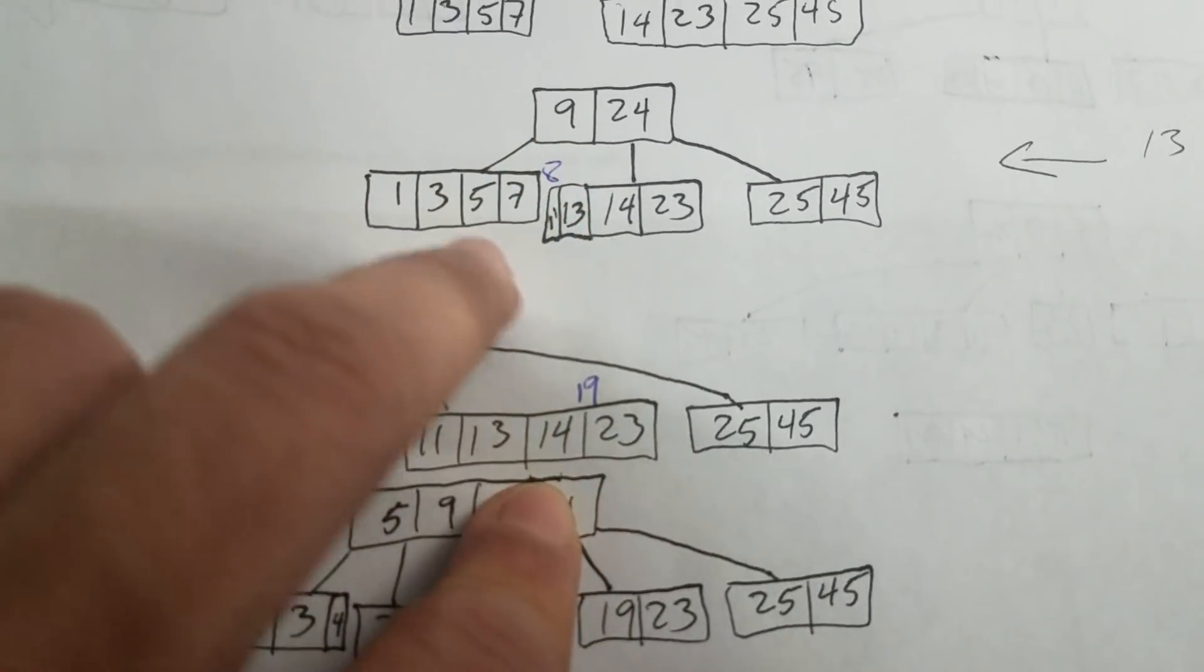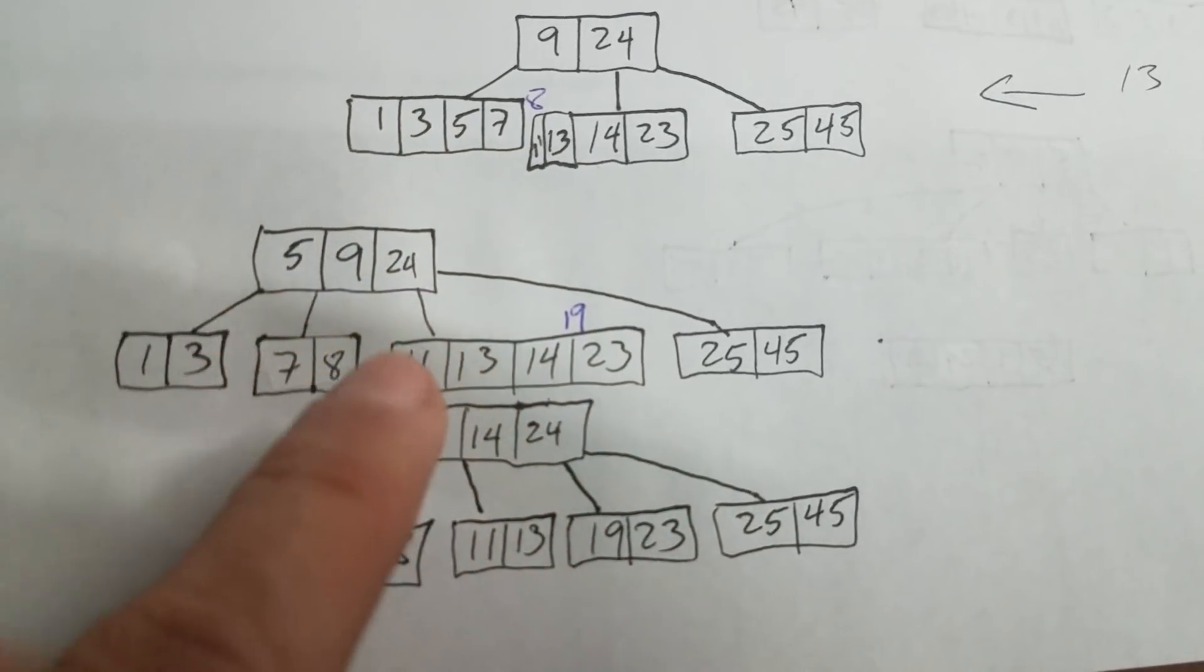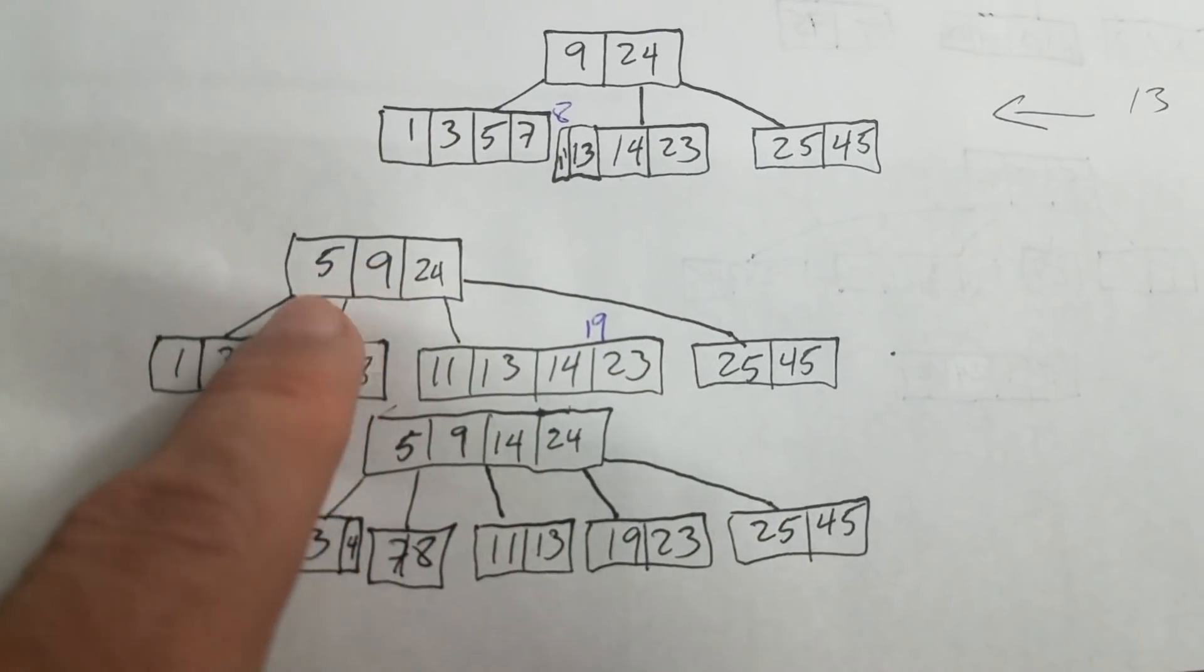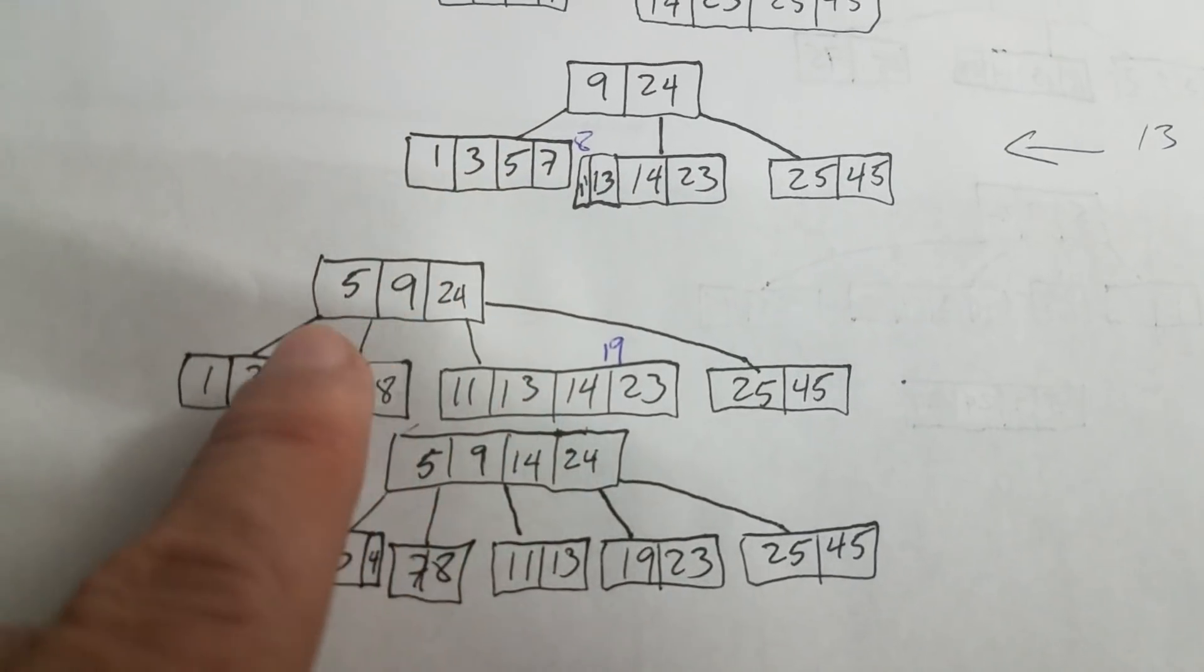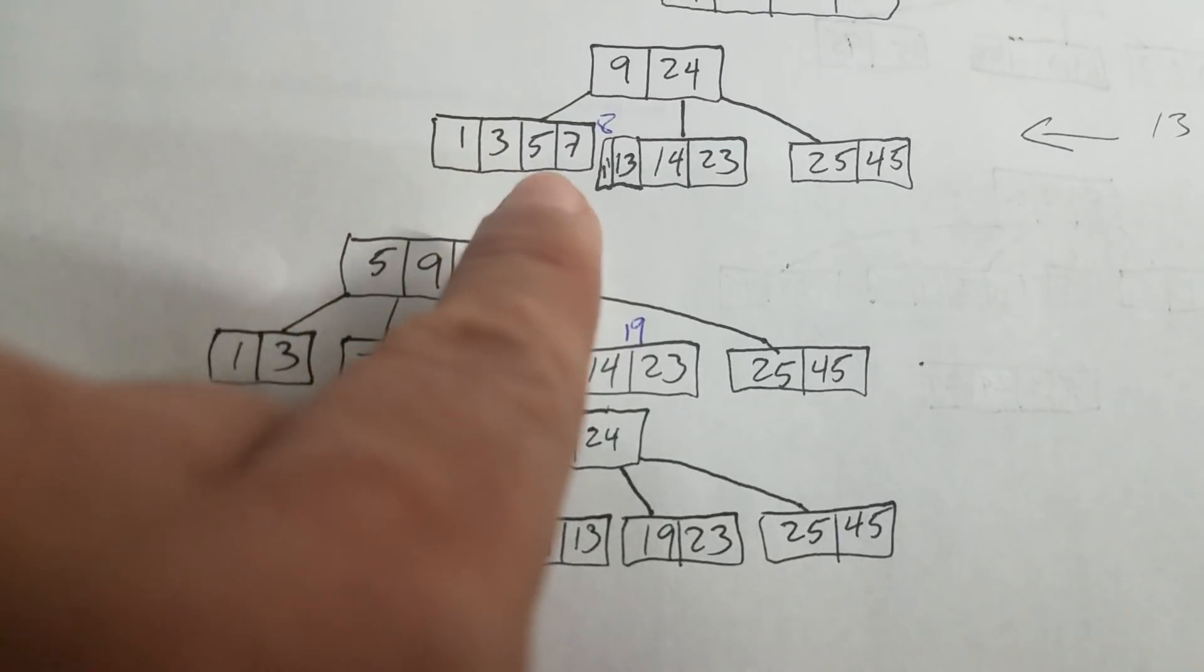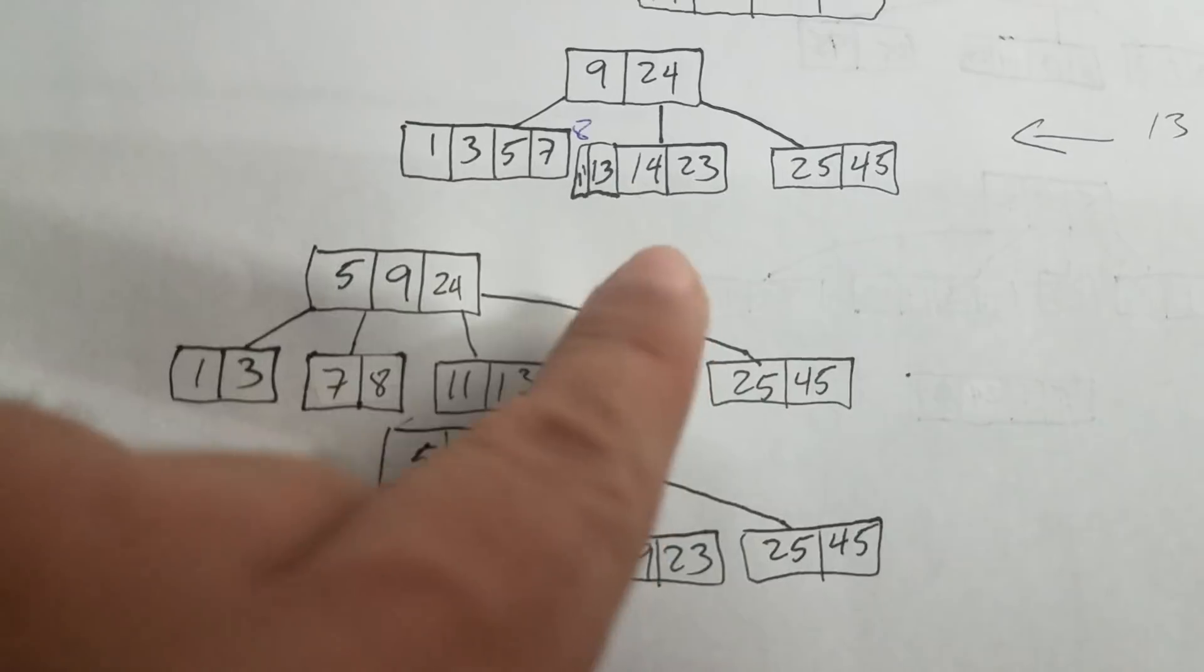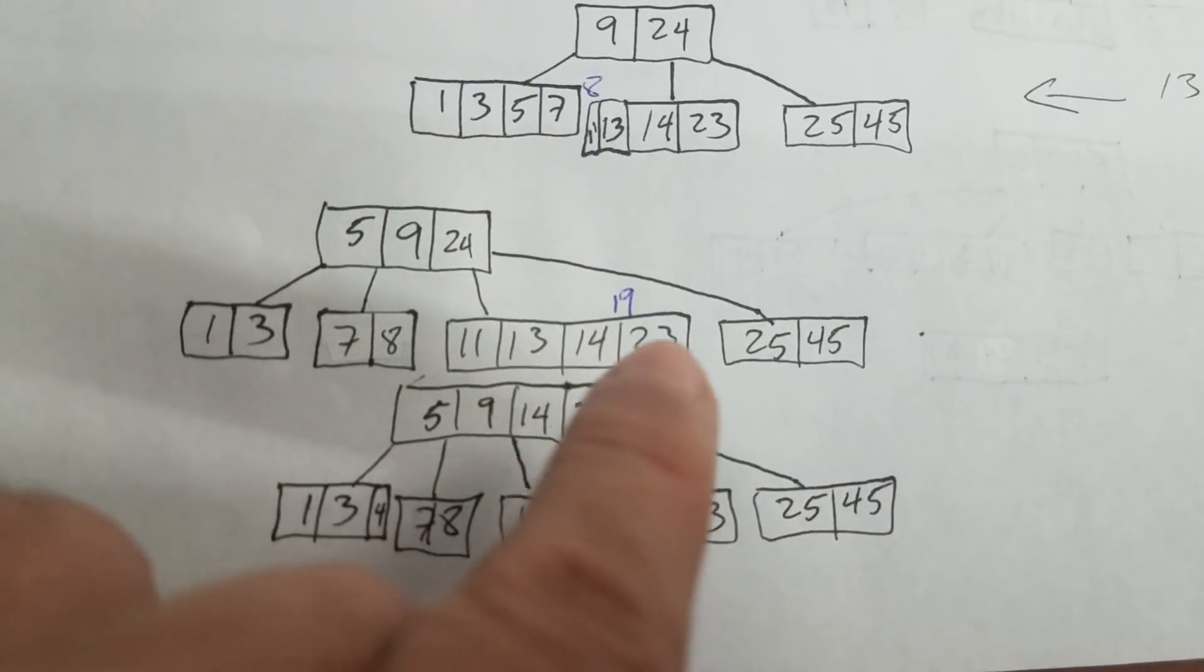We're going to promote it to the top and then we're going to split these two. So you see, 5, this one here, the middle one. We promote it to the top and we split 1, 3 and 7, 8. And then this one here, they remain the same.